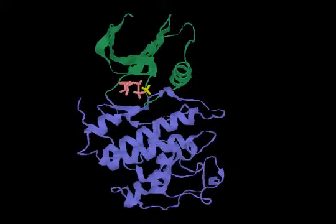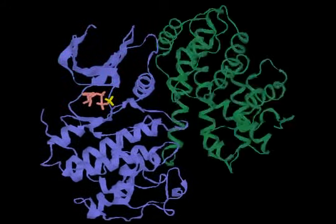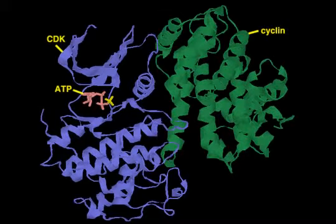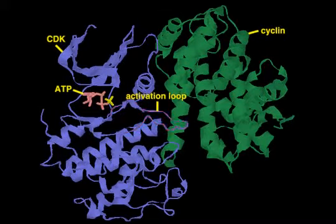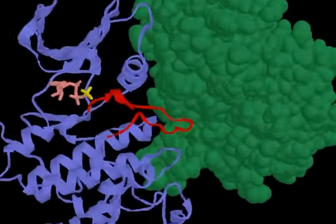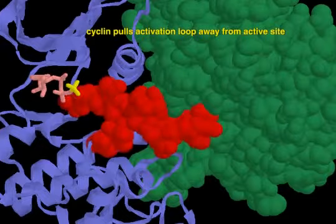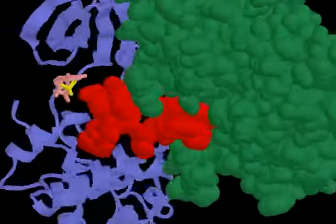As their name suggests, cyclin-dependent kinases are activated by cyclins. Cyclin binding to CDK pulls the T-loop away from the active site and exposes the bound ATP, allowing it access to target proteins. Thus, a CDK can phosphorylate target proteins only when it is in a cyclin-CDK complex.